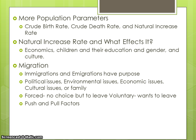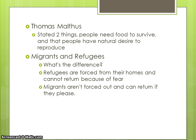Chain migration is when people hear from family that it's better in another country and move with them. Migration can also be forced — where they have no choice but to leave — or voluntary, where they want to leave for a better life. There are also push and pull factors: push factors push people out of their country, such as wars or plagues, and pull factors pull people in, such as fertile lands, water, and easier access to resources.